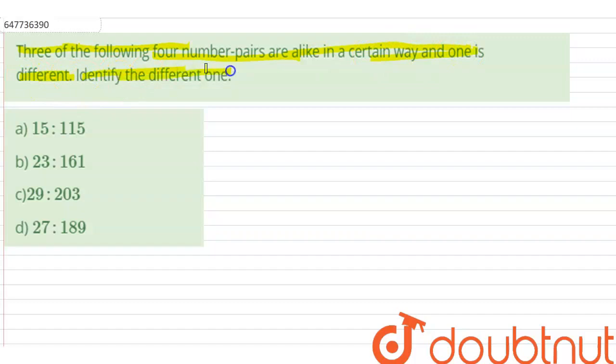Identify the different one. So here are four options in which three number pairs are similar in a certain way, and one number pair doesn't fit the logic. That number is the odd one out.